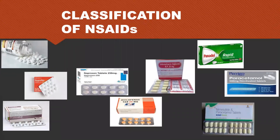Coming to the classification of NSAIDs. NSAIDs are classified based on their selective or non-selective inhibition of the cyclooxygenase enzyme, which is found bound to the endoplasmic reticulum of the cells. It is of three types: COX-1 or the constitutive type acts in physiological conditions; COX-2 or the inducible type is induced in inflammatory cells by pathological stimulus; and COX-3 is present in the brain.